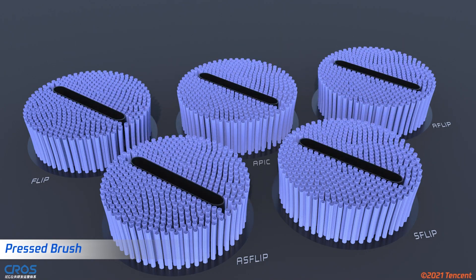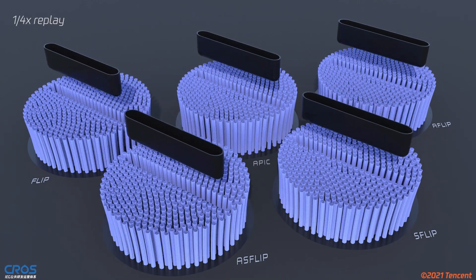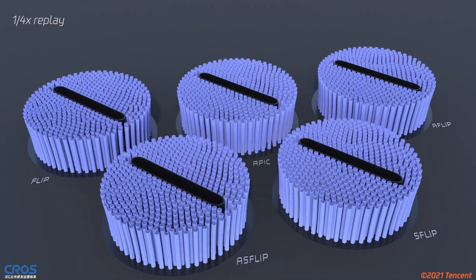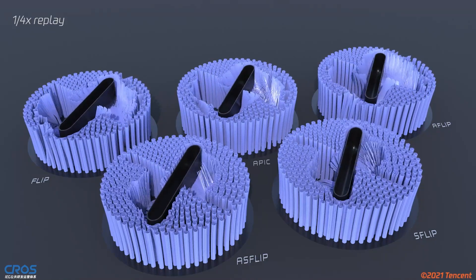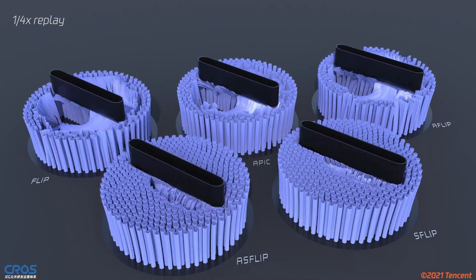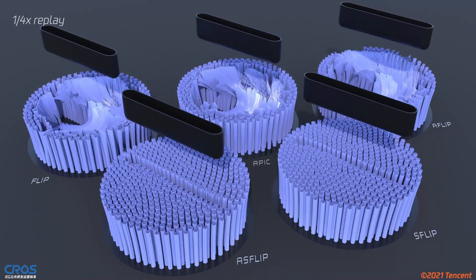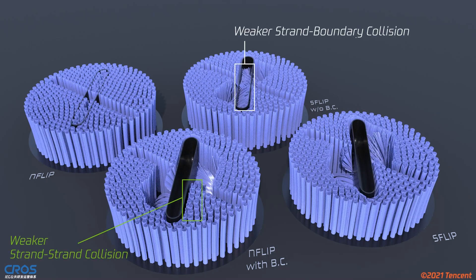In this scenario, without our corrections, APIC, FLIP, and SFLIP fail to recover the rest shape, and the strands keep being entangled. On the other hand, ASFLIP and ASFLIP do not suffer from this visual artifact. We also compare NFLIP, ASFLIP, and the integrators in which only the boundary or the volume ratio is considered. NFLIP cannot handle any collision. Instead, SFLIP correctly handles both strand-strand and strand-boundary collisions.